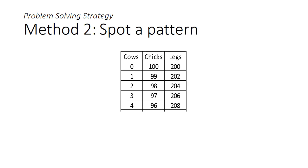Alternatively, you could spot a pattern. As you construct the table, you notice that as you increase the number of cows by 1, the chickens go down by 1, and the number of legs go up by 2.